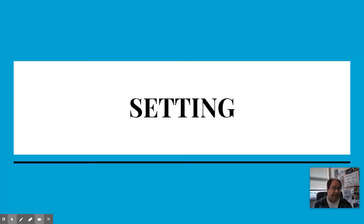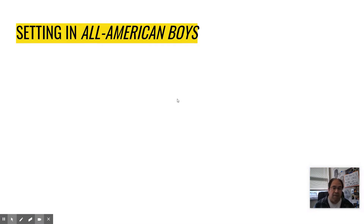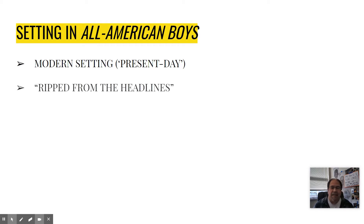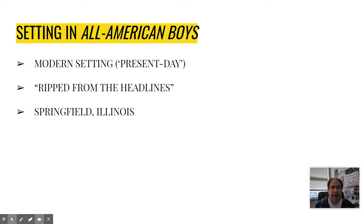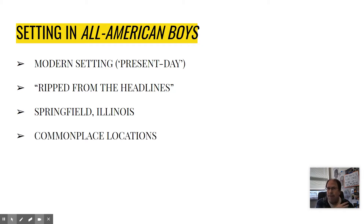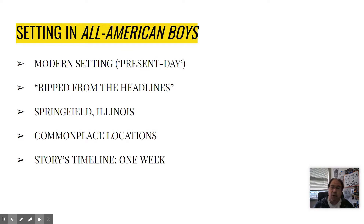Let's get started with setting. The backdrop of these two stories is very different in terms of time and place. All American Boys is a very modern novel, published in 2015, and it has a rip-from-the-headlines feel to it even today. It's set in Springfield, Illinois, which is about as close to an anywhere-USA setting as you can get — Springfield is actually common to 34 different US states. The actual locations featured throughout the book are very commonplace, such as a school, various people's homes, and a hospital. The story takes place over the course of a week, so the events are all very tightly intertwined.